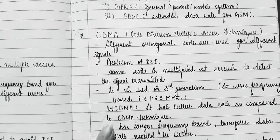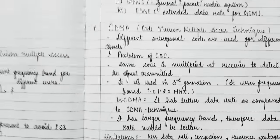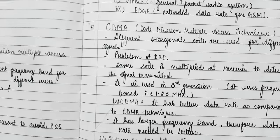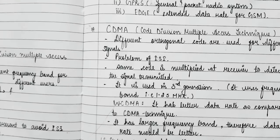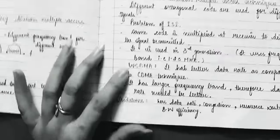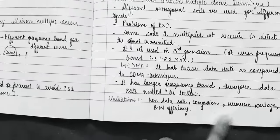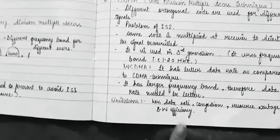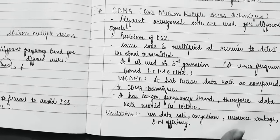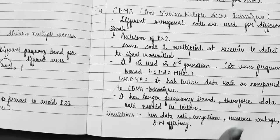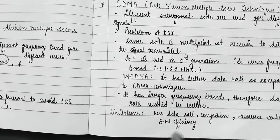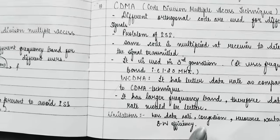One example of CDMA is WCDMA. In WCDMA, the larger frequency band means the data rate is better compared to standard CDMA, which has a frequency band of 1.25 MHz. However, there were limitations in WCDMA: less data rate, congestion problems, resource wastage, and bandwidth inefficiency. Resource wastage occurs because, for example, at night we are not using data so resources are wasted.